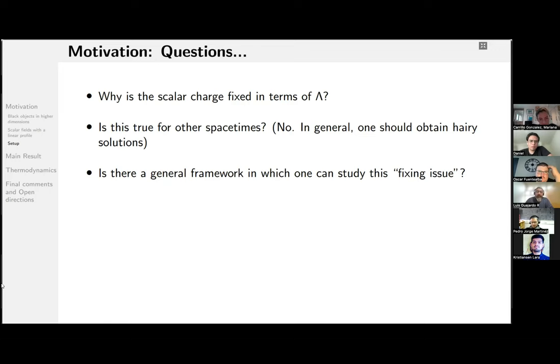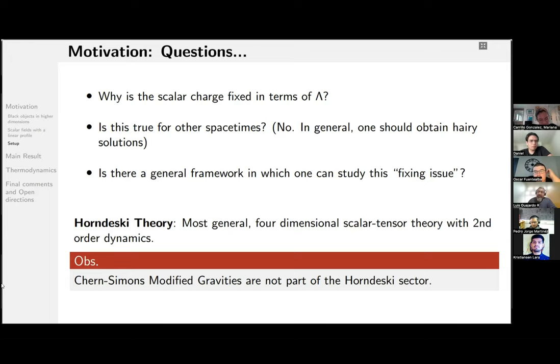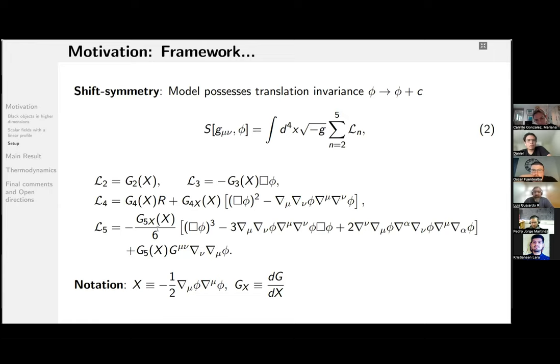And the answer is affirmative in this case. We have, at least in four dimensions, the most general scalar-tensor theory, keeping second-order dynamics, the Horndeski theory. And just a reminder, Chern-Simons modified gravities are not part of the Horndeski sector, so hereafter, we are extending Cisterna-Oliva models. Okay, so in particular, for this talk, we restrict to the shift symmetry sector. So the model under scope possesses translation invariance.